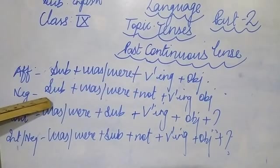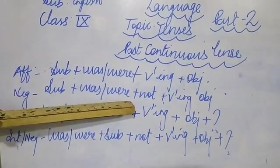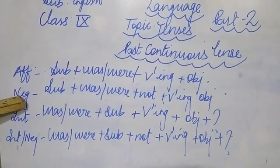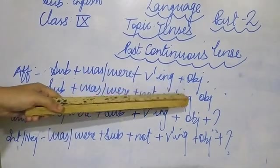In the negative sentence, subject plus was, were, for putting not, you have to show the symbolization of negative sentence, first form with ing and object.